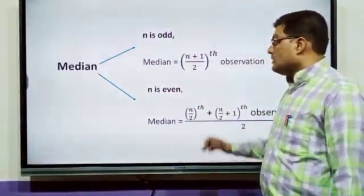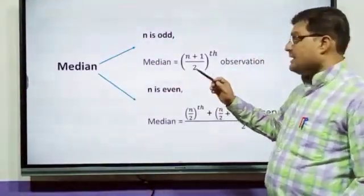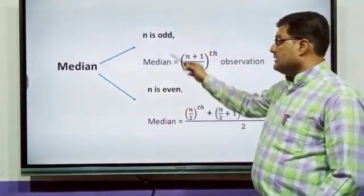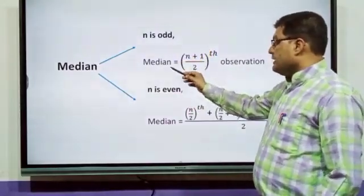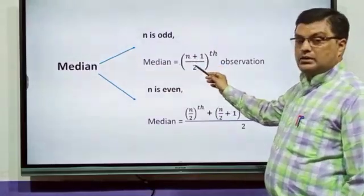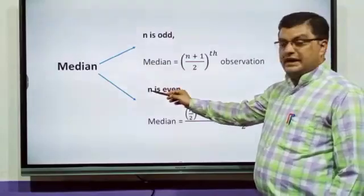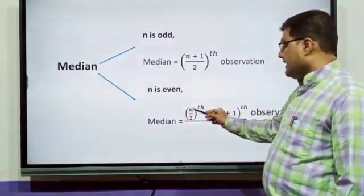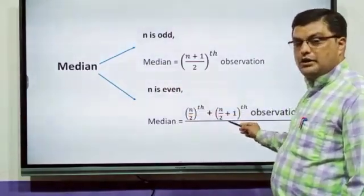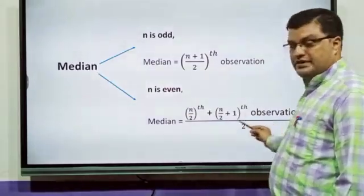Now, there are two types of median to find out. This is odd and even. The formula of odd: median equals (n+1)/2th observation. Median of even: median equals [(n/2)th + (n/2 + 1)th observation]/2.